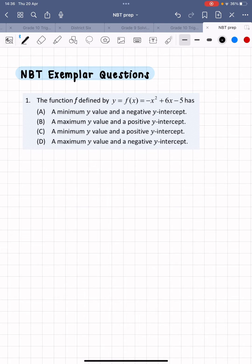They are saying that the function f defined by this equation, negative x squared plus 6x minus 5, let me just highlight that, f of x is negative x squared plus 6x minus 5, has, and now we need to choose. Now guys, don't be fooled.